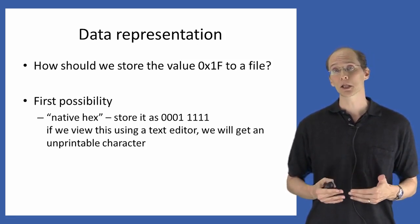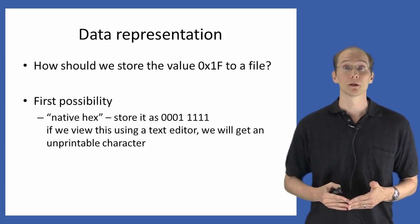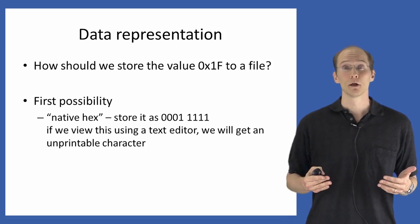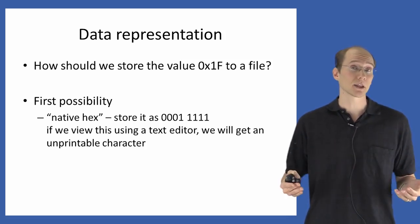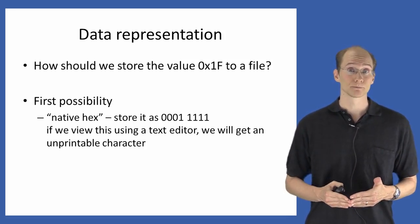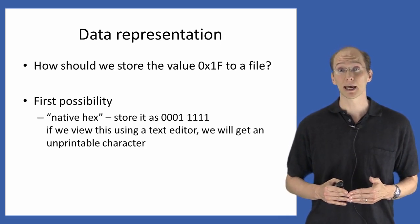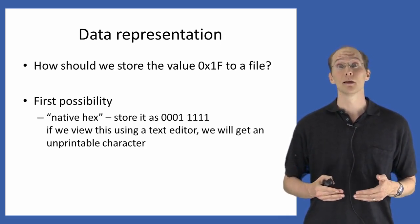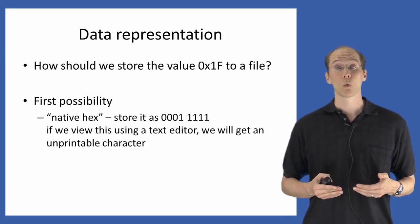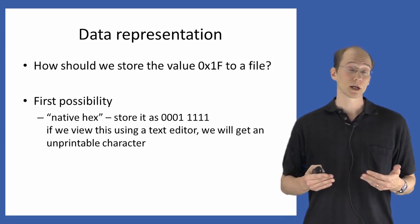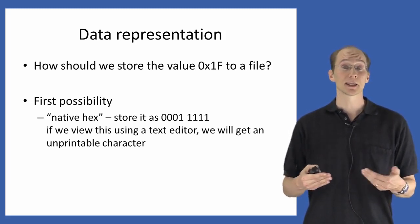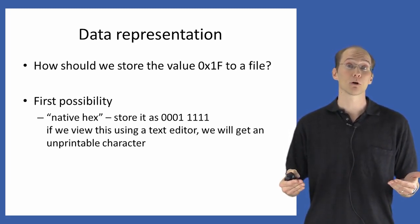And there are two natural ways we could go about doing this. The first possibility is what I'll call native hex. So we'll store the value exactly as the sequence of bits that it represents. So we've seen already that the hex value 1F corresponds to the sequence of eight bits, 00011111. So what we could do is just store the value hex 1F to a file as the sequence of eight bits, 00011111.